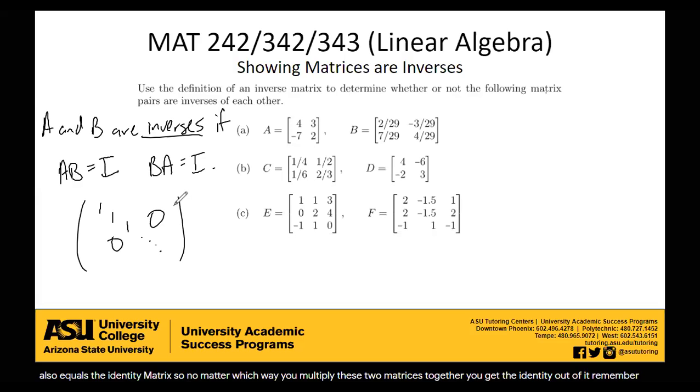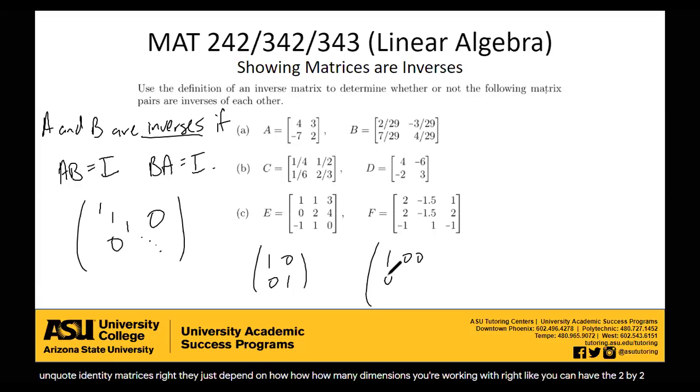There are tons of different quote-unquote identity matrices. They just depend on how many dimensions you're working with. You can have the 2 by 2 identity matrix, the 3 by 3 identity matrix, the 4 by 4, the 5 by 5. Everyone knows which identity matrix you're working with depending on the dimensions of these guys that you're multiplying.